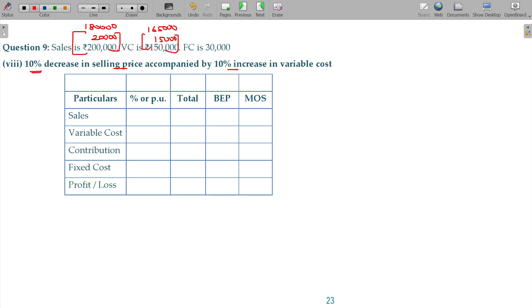So, sales being 1,80,000 rupees, variable cost being 1,65,000 rupees, contribution being 15,000 rupees, and fixed cost being 30,000. Actually, you are facing a loss.